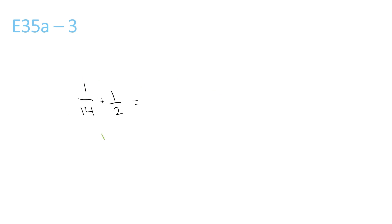14 and 2 both go into 14, that's the lowest number. 1 over 14 stays the same because it's already over 14. But 1 over 2, 2 times 7 is 14, so you have to do 1 times 7 to get 7 over 14. This equals 8 over 14. Now we can simplify this by dividing the top and bottom by 2. 8 divided by 2 is 4, 14 divided by 2 is 7.